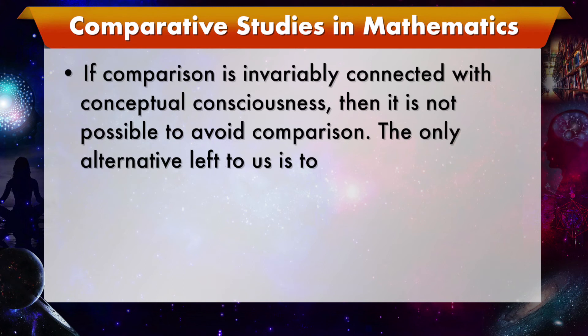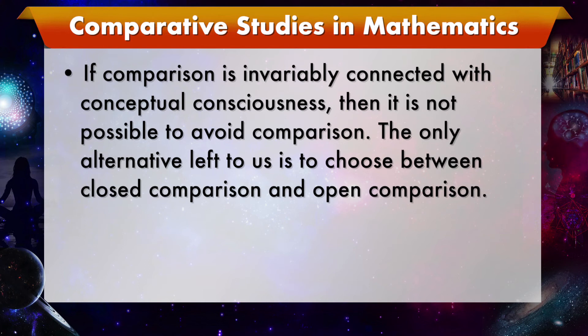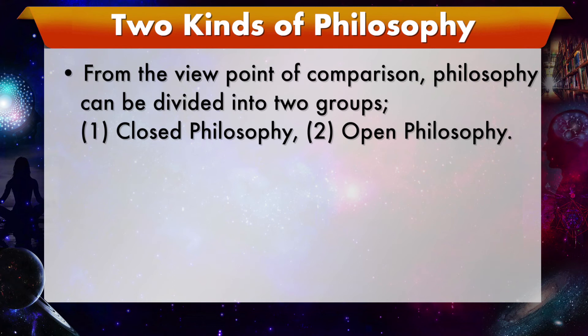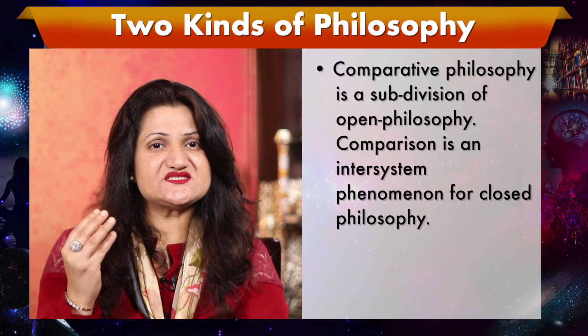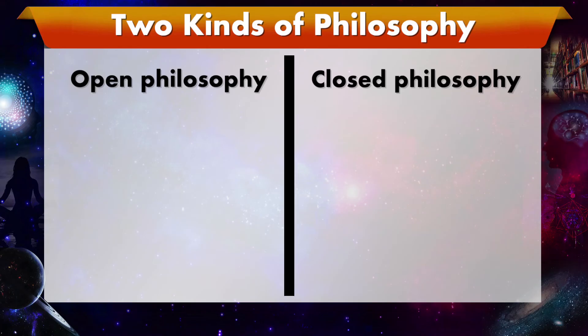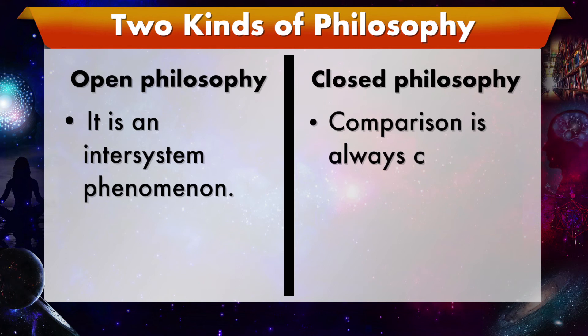If comparison is invariably connected with conceptual consciousness, then it is not possible to avoid comparison. The only alternative left to us is to choose between closed comparison and open comparison. A non-comparative philosophy is also engaged in doing comparison, but within the boundaries of its own system. From the viewpoint of comparison, philosophy can be divided into two groups: closed philosophy and open philosophy. Comparative philosophy is a subdivision of open philosophy. For closed philosophy, comparison is an intra-system phenomenon; for open philosophy, it is an inter-system phenomenon.